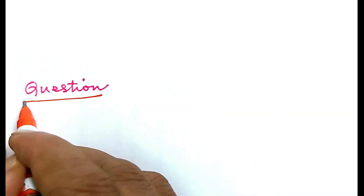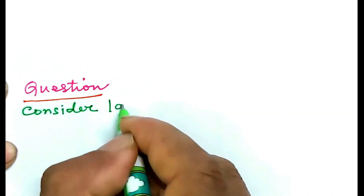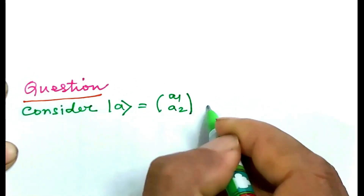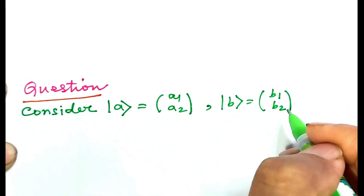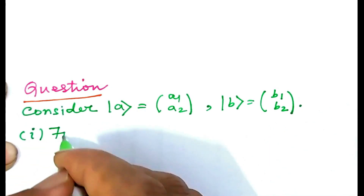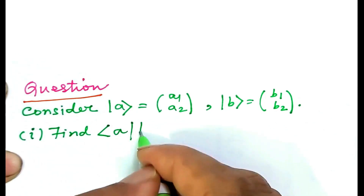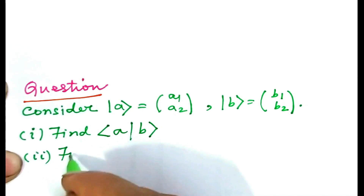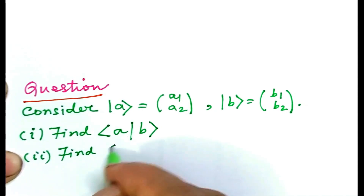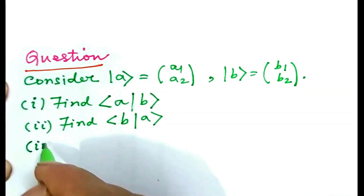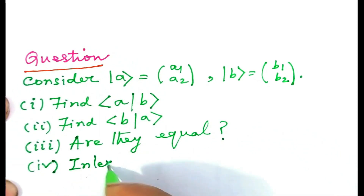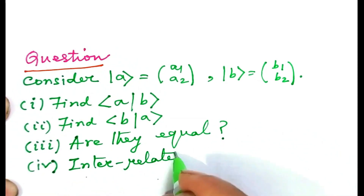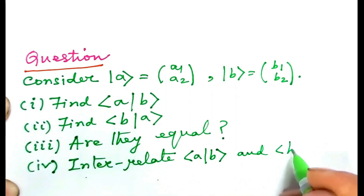Let us address the following question: consider ket A to be the column matrix (a1, a2) and ket B to be the column matrix (b1, b2). Number one: find the inner product bra A ket B. Number two: find the inner product bra B ket A. Number three: are they equal? Number four: interrelate the inner products bra A ket B and bra B ket A.